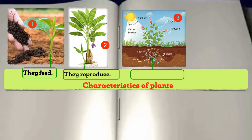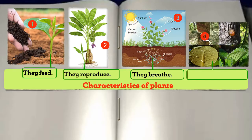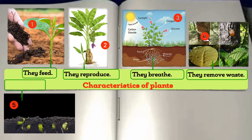The following are the characteristics that make plants living things. 1. Plants feed. 2. They reproduce. 3. Plants breathe. 4. They remove waste.